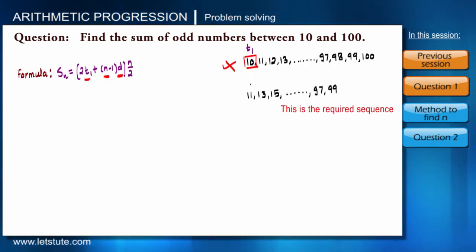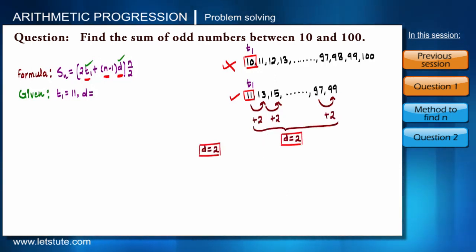See friends, we make mistakes like this only. Even if this is the range, we have to pick the odd numbers only, right? So now the numbers will be 11, 13, 15 to 97 and 99. 99 is the last odd number in this range. Now you tell me what is T1? T1 is 11, right?